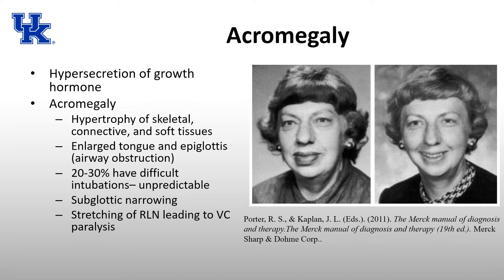With acromegaly, you see hypertrophy of skeletal, connective, and soft tissues, which can lead to quite a few anesthetic problems. You can have an enlarged tongue and epiglottis, leading to airway obstruction or difficult mask ventilation. Twenty to thirty percent actually have difficult intubations, and it's unpredictable based on looking at the patient whether or not their airway is going to be difficult. They can have subglottic narrowing due to tissue hypertrophy, and nerves can be stretched — including the recurrent laryngeal nerve — leading to vocal cord paralysis and hoarseness. Acromegalic disease also has an association with hypertension and diabetes.